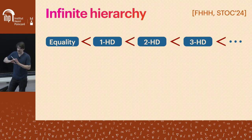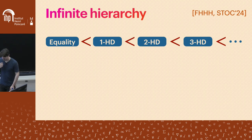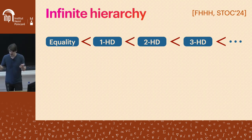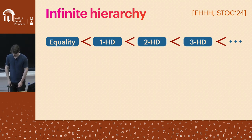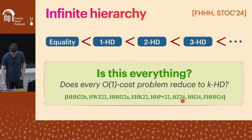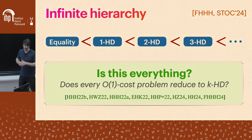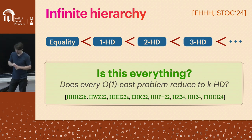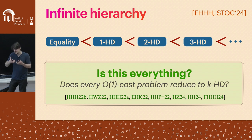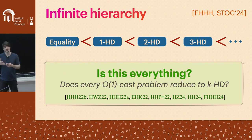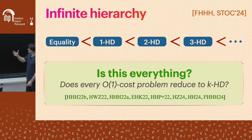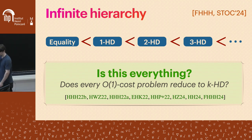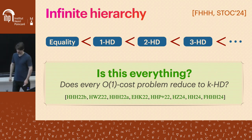This puts all the known examples in this regime and understands all their relationships. But the big open question is: is this everything? Is constant-cost communication just studying Hamming distance and that's it? There has been loads of work studying this constant-cost regime — people have studied distance-k connectivity and Cartesian products of planar graphs — yet so far all these protocols are just clever reductions to Hamming distance. The prior work left open: does every constant-cost randomized problem reduce to some Hamming distance problem?